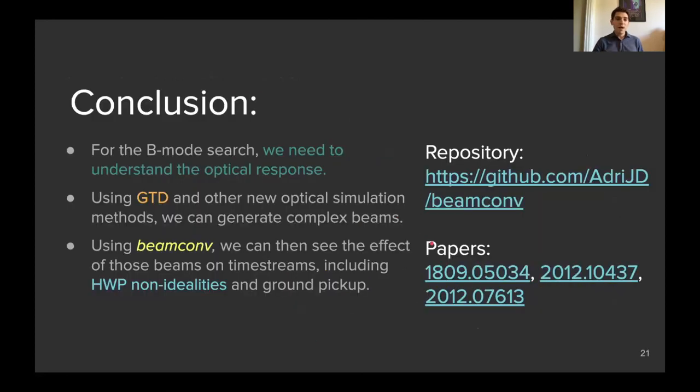Okay, so to conclude, for the B mode search, we need to understand the optical response of our telescope. It's critical. We can do this first by making better beams using new optical simulation methods, maybe GTD, and then pushing those beams through simulation tools like BeamConv, where we can then see their effects on the time streams, including effects like half-wave plate non-idealities or ground pickup. Thank you very much, and if you're interested, you can download BeamConv. It has great notebooks, and it's very well documented.